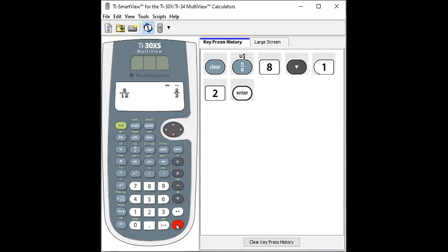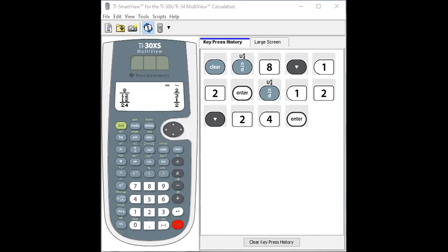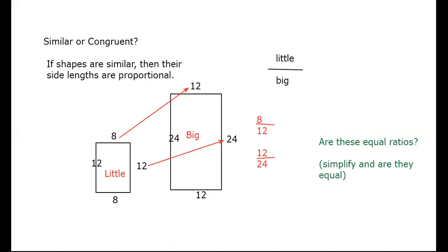8 over 12 simplifies to two-thirds. Now, N over D, 12, directional pad down, 24. That's one-half. One ratio simplifies to two-thirds, and one ratio simplifies to one-half. So 8 over 12 equals two-thirds, and 12 over 24 equals one-half. Are those the same? No, they're not the same. Those figures are not similar.